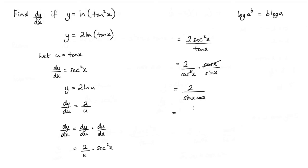Now 2 over sin x cos x is the same as 2, well 1 over sin x, that's cosec x. So 1 over cos x, well that is sec x.